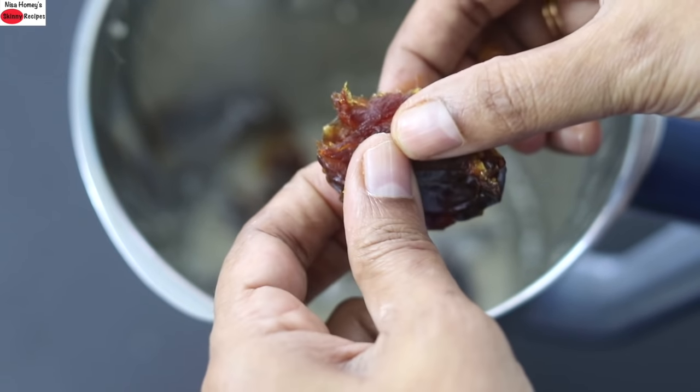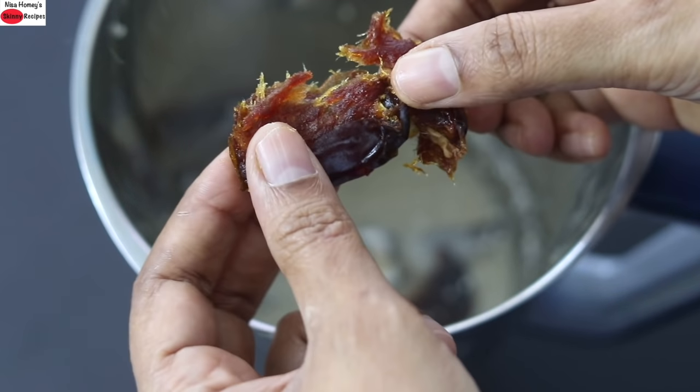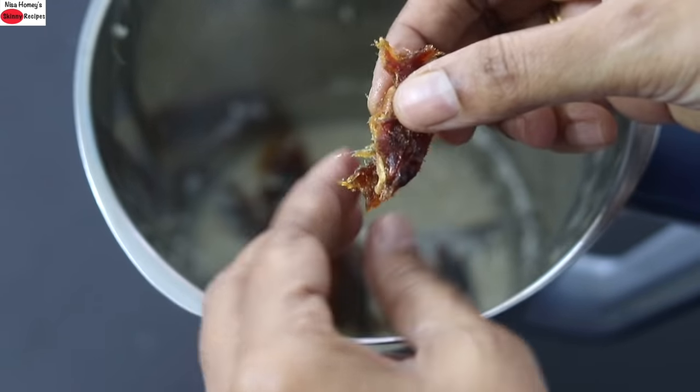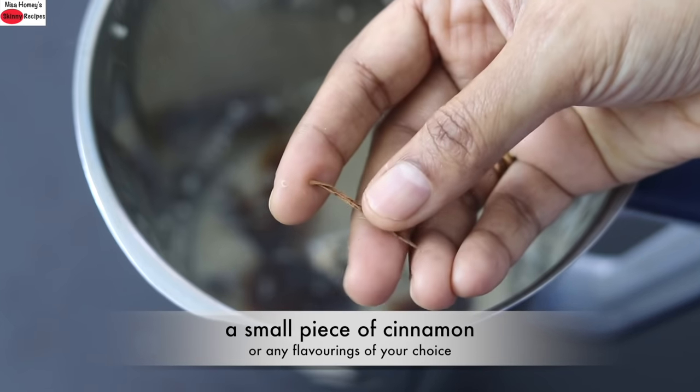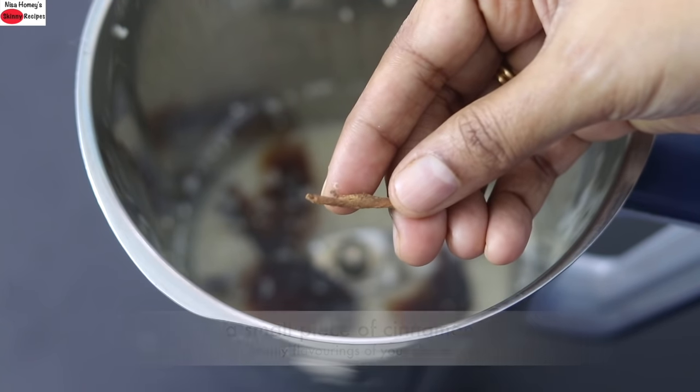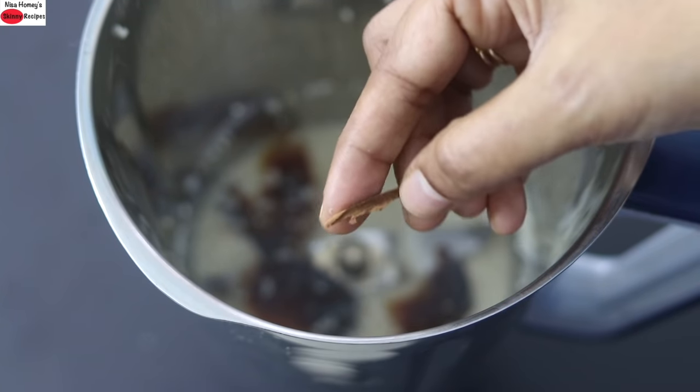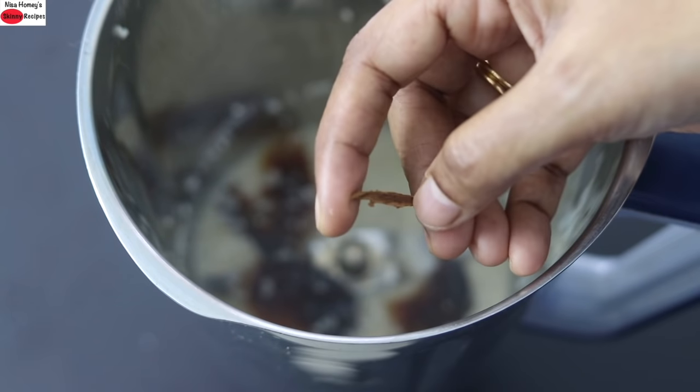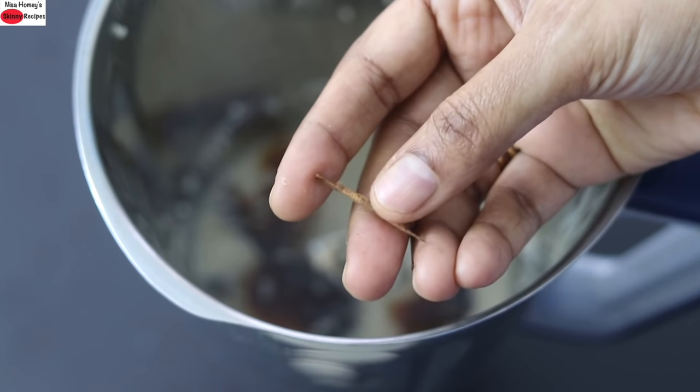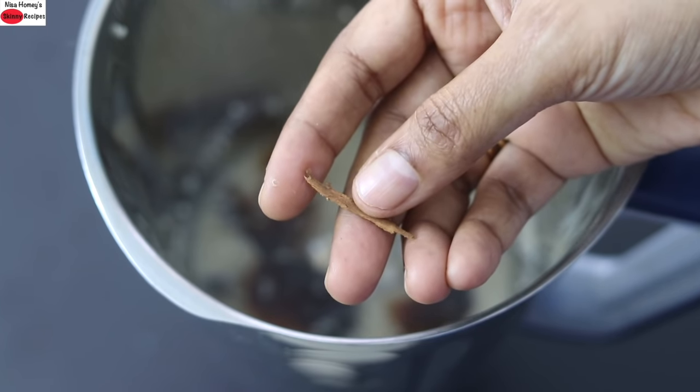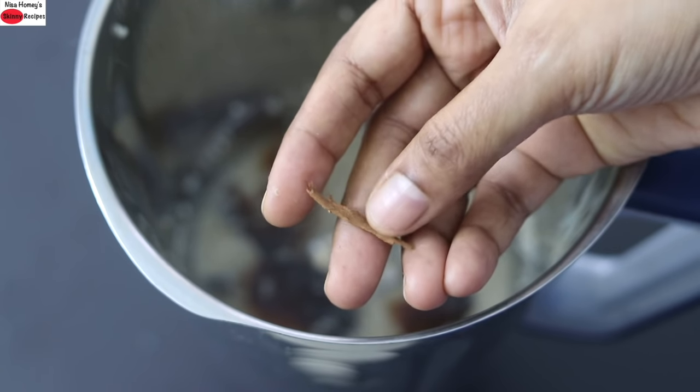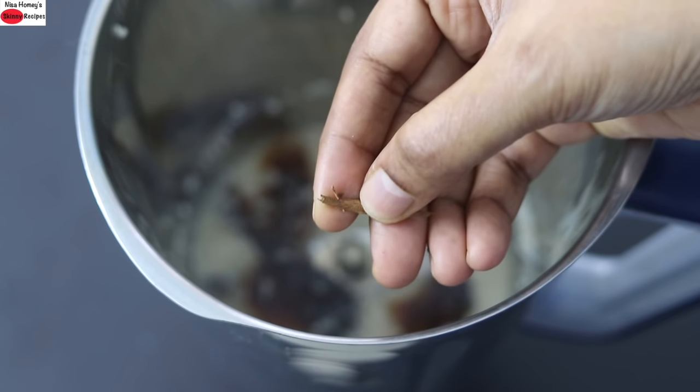If you're not using soft dates like medjool dates, then you may need to soak the dates and then add. I'm adding in a small piece of cinnamon. The addition of dates or any sweetener of your choice is entirely optional. The dates and cinnamon help to balance the subtle bitterness or you can call it a subtle aftertaste of the sesame seed milk.